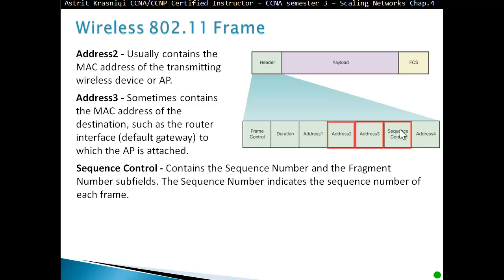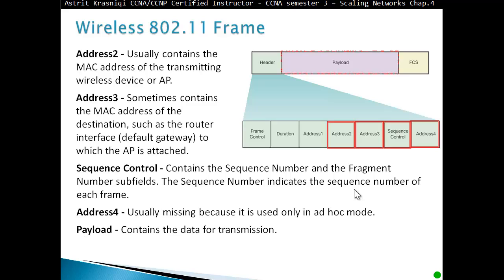We have a sequence control field which contains the sequence number and fragment number subfield. Address 4 is usually missing because it's used only in ad hoc mode. Then we have the payload which contains the data for transmission and frame check sequence used for layer 2 error control.